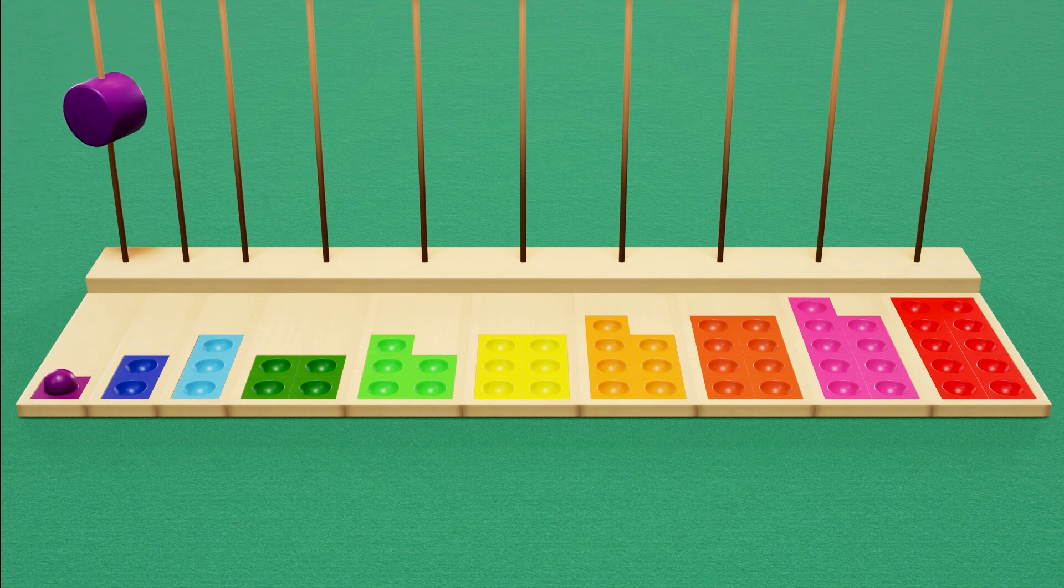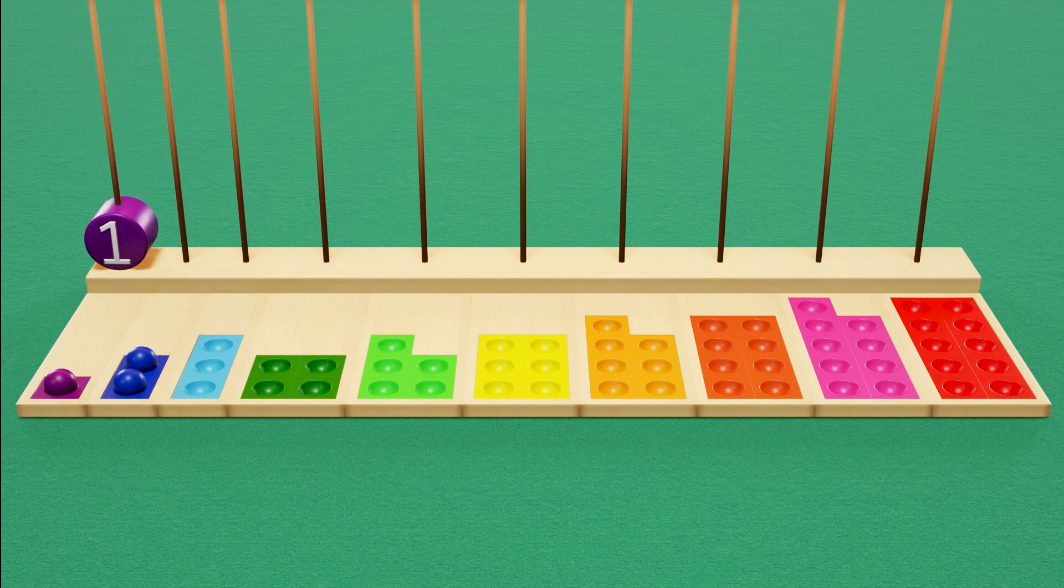One. Here's a purple circle with number one. One, two. Here's a blue square with number two.